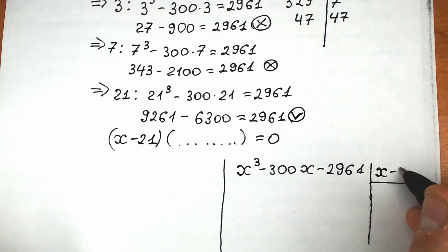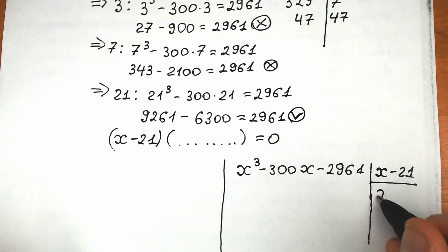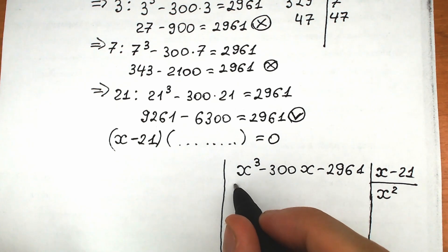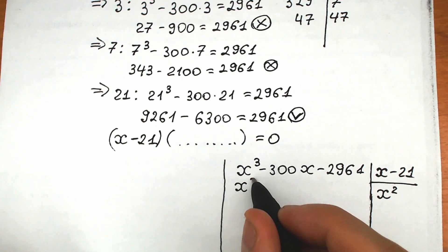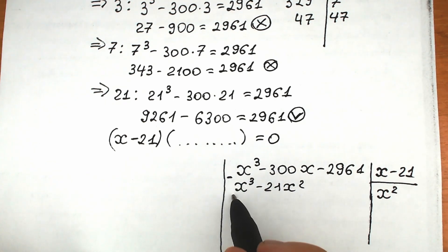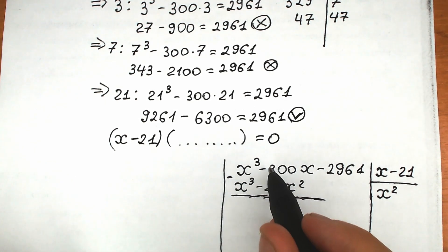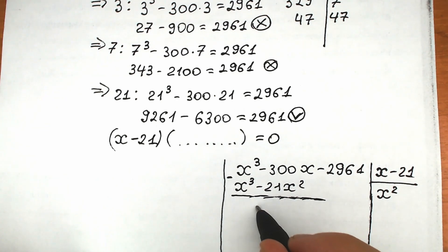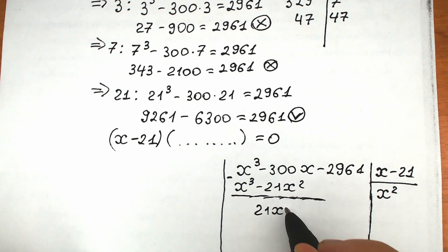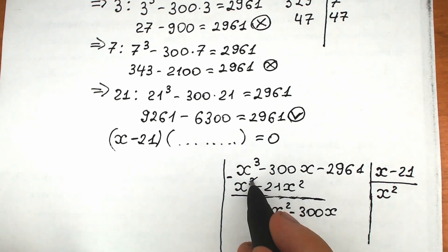We divide x cubed minus 300x minus 2,961 by x minus 21. Multiplying x minus 21 by x squared gives us x cubed minus 21x squared. We subtract, which gives us 21x squared minus 300x, and the x cubed terms cancel.